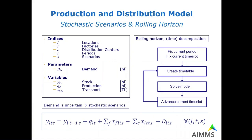More specifically, we have production, stocks, and distribution variables. Demand is uncertain, so we consider stochastic scenarios for demand. At the same time, we have the time element, and rather than solving the entire problem for all time periods at once, we can decompose this using a rolling horizon approach and solve it step by step. AIMMS has specific functionalities that can create timetables fed into the model that is being solved at each roll during the rolling horizon approach.